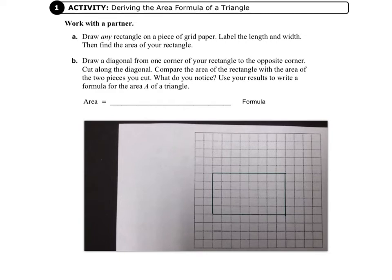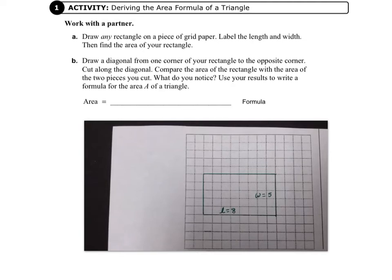The first step is to draw the rectangle, and I've done that. In the next step, I will label the length and width. I've chosen a rectangle with a length of 8 units and a width of 5 units. This gives us an area of 40 square units. Your rectangle might be different, so count your squares carefully.